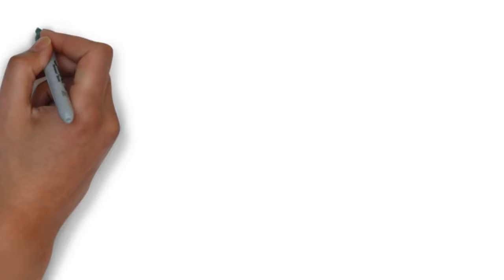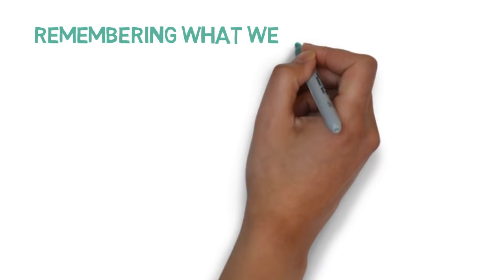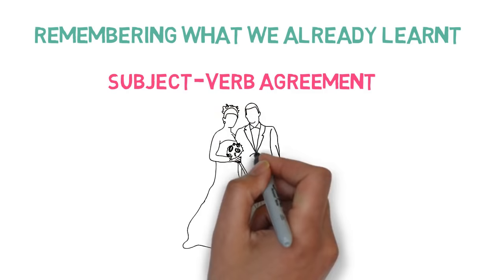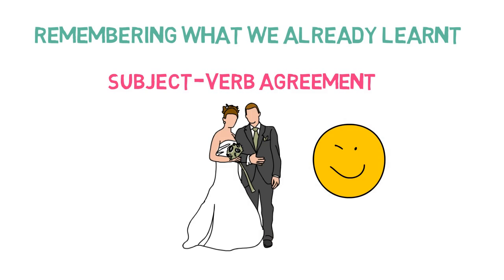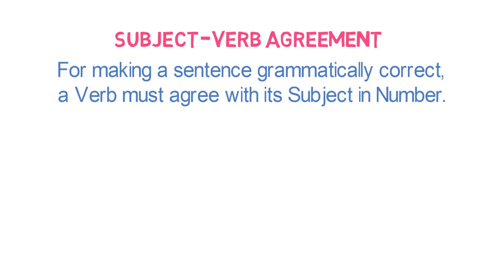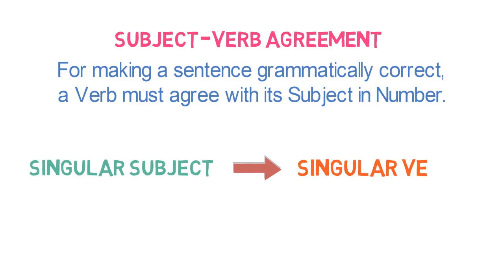Firstly, we will remember what we already learnt in our previous video. We learnt the Subject Verb Agreement. So what is the Subject Verb Agreement? For a happy married life, a husband must agree with whatever the wife says. In the same way, in case of Subject Verb Agreement, for making a sentence grammatically correct, a verb must agree with its subject in number. That is to say, in any sentence, singular subject must have singular verb and plural subject must have plural verb.